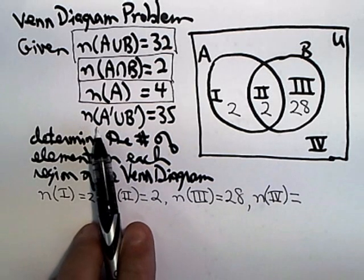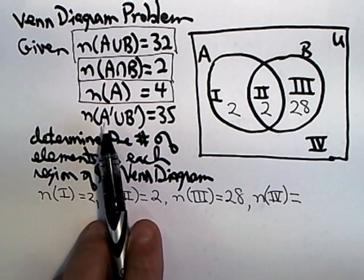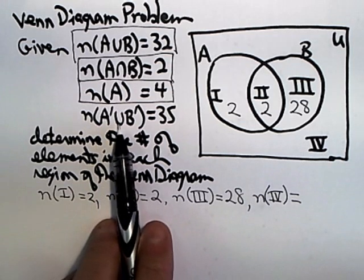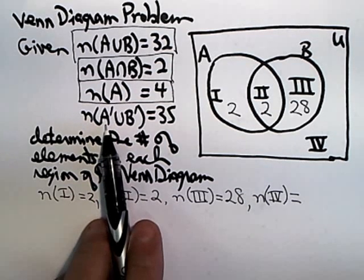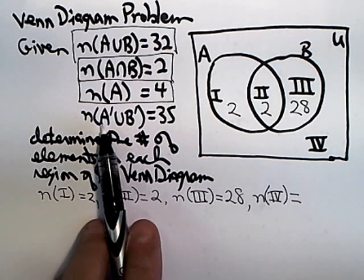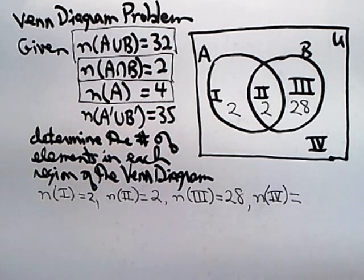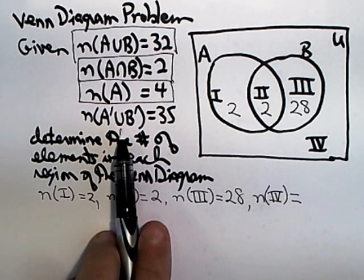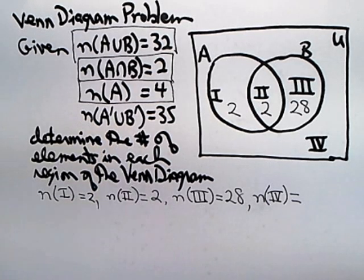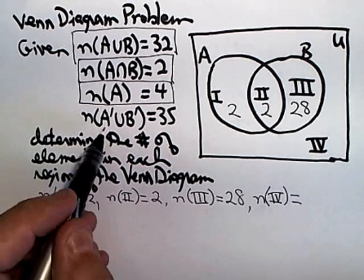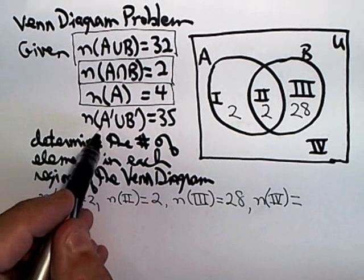And the only piece of information we haven't used is this. It says the union, not the intersection, but the union of A prime and B prime, or A complement and B complement. And remember, when we're doing union, anything that gets shaded is in the union. So at this point, I might just actually do the shading so I can be sure I'm right.